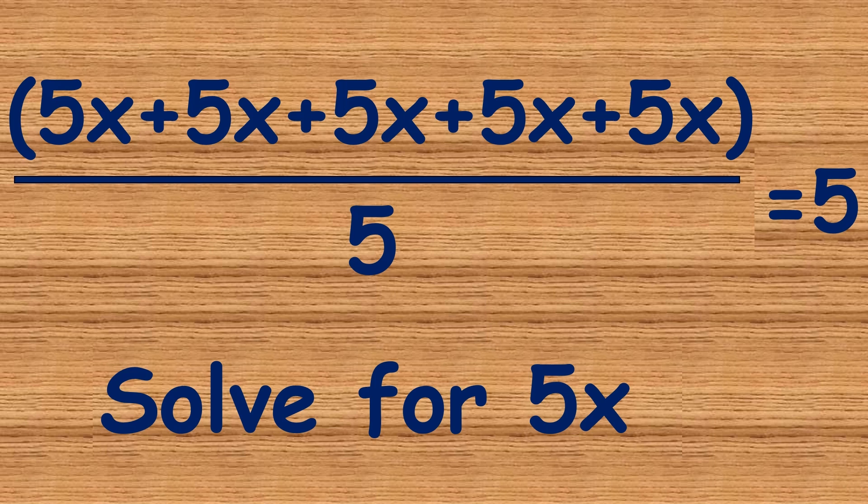So we have 5x plus 5x plus 5x plus 5x plus 5x — that is 5x in 5 places — divided by 5, and that gives us 5.